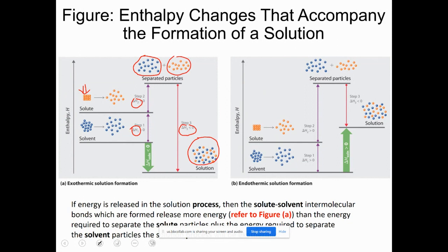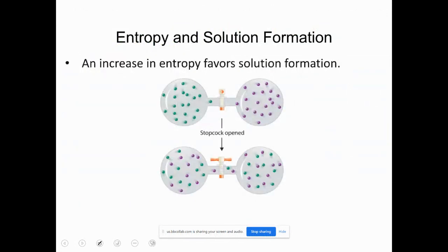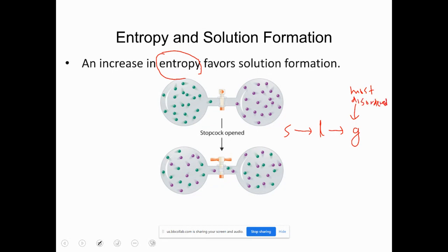I ended the last class with a figure on entropy. Entropy is something we'll cover towards the last week of the semester. Entropy is defined as the degree of disorderedness in a substance. Thinking about solid, liquid, and gas — gas is the most disordered because molecules are much further apart with more space to move.